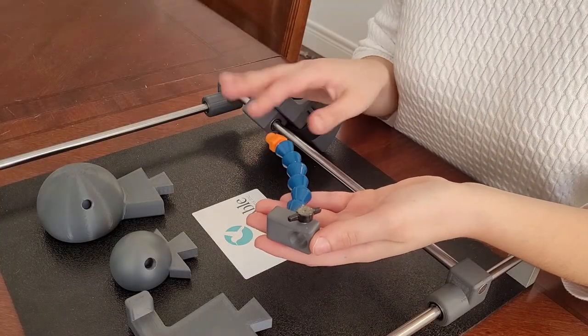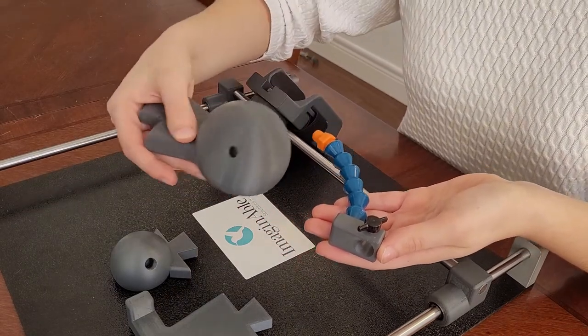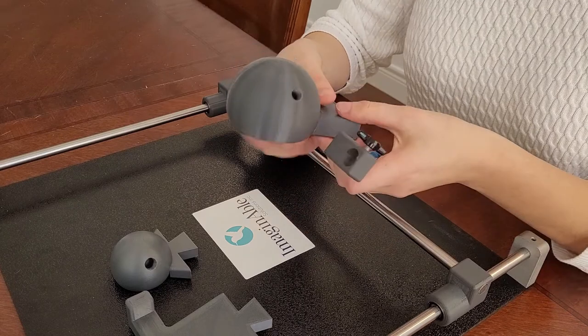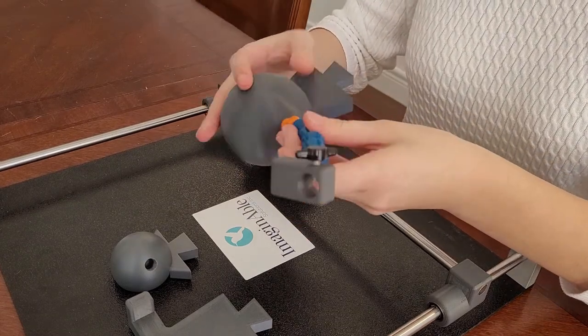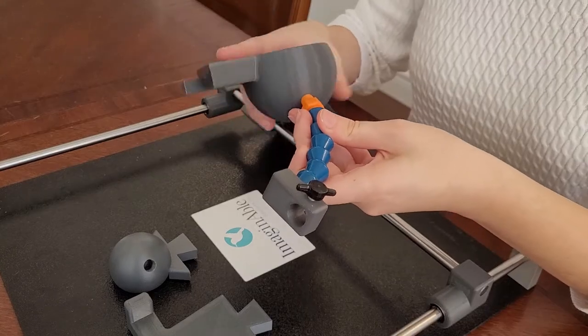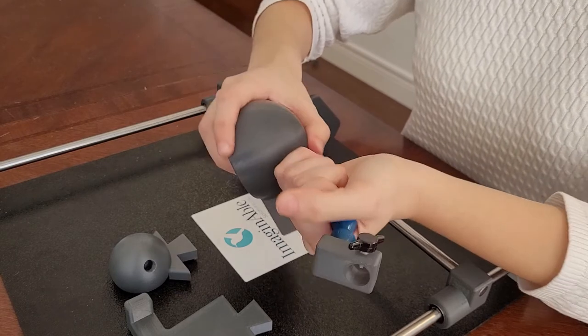This is our utensil arm. Our ambidextrous handpiece allows the utensil arm to be installed in either the left or right side depending on your dominant hand. Since I am right-handed, I will twist the end of the utensil arm seen in orange in the left hole of the handpiece until it is secure in place. If you are left-handed, twist the arm into the right hole.